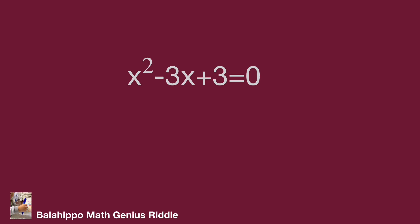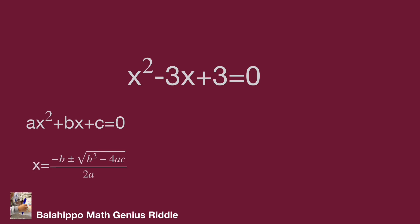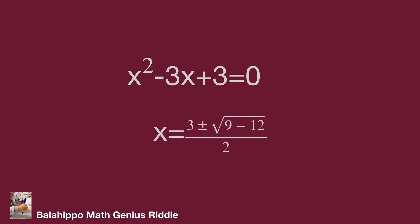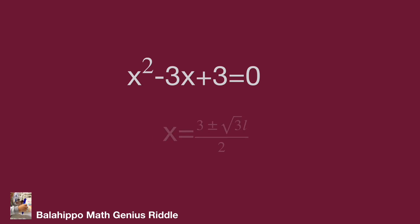Using the quadratic formula for ax squared plus bx plus c equals 0: x equals negative b plus or minus square root of (b squared minus 4ac), all over 2a. Applying the formula to x squared minus 3x plus 3 equals 0: x equals 3 plus or minus square root of (9 minus 12), all over 2, which equals 3 plus or minus the square root of negative 3, all over 2, giving two complex answers.